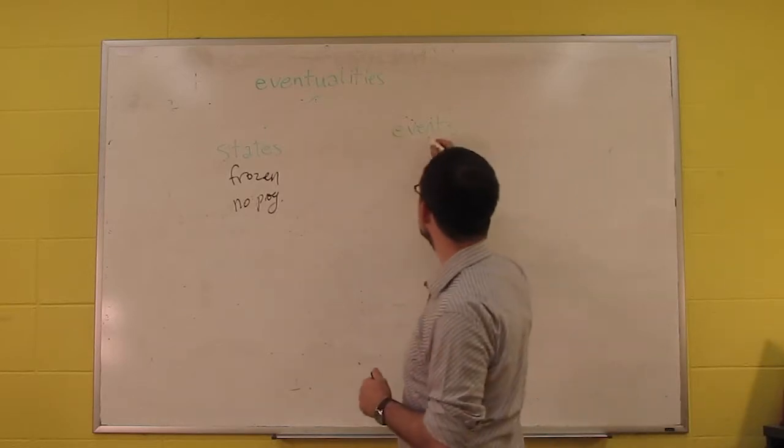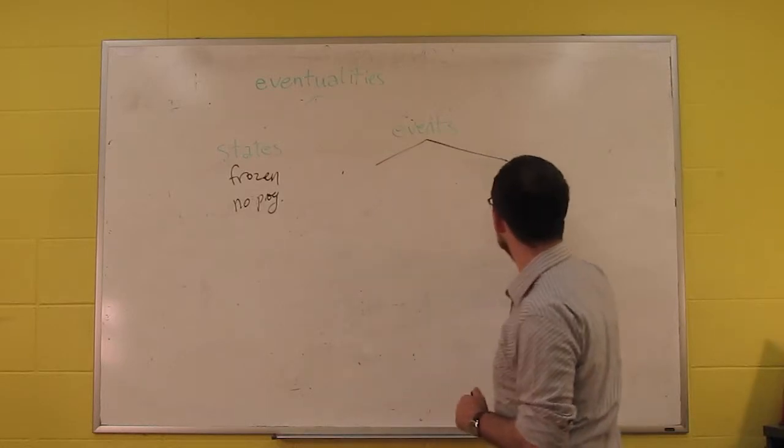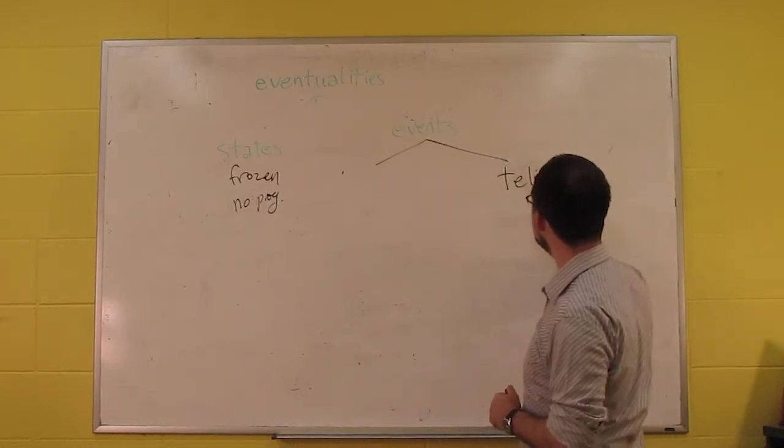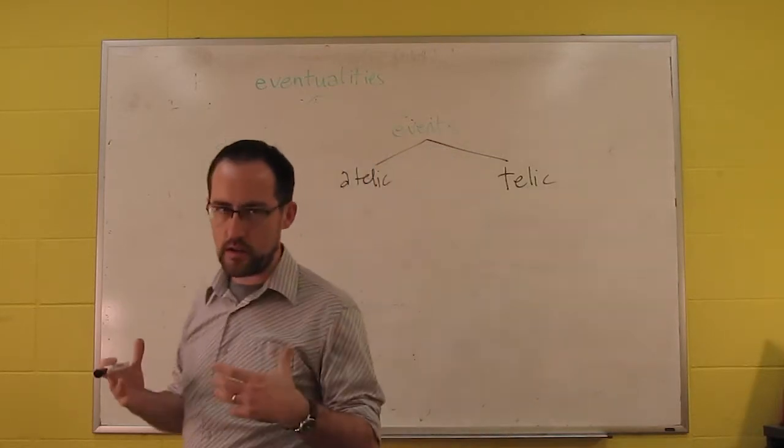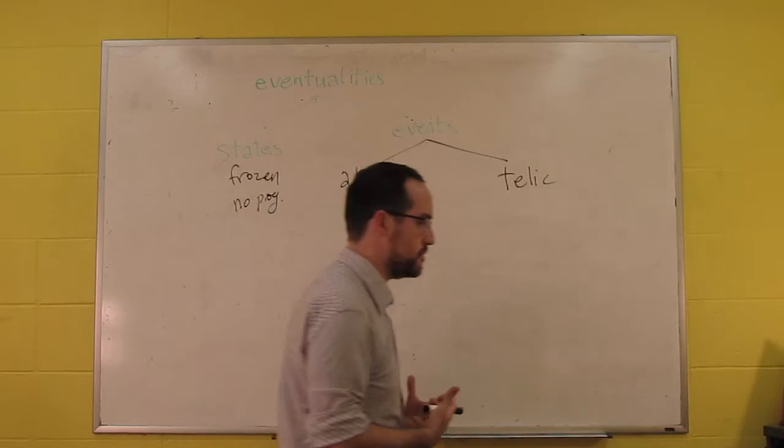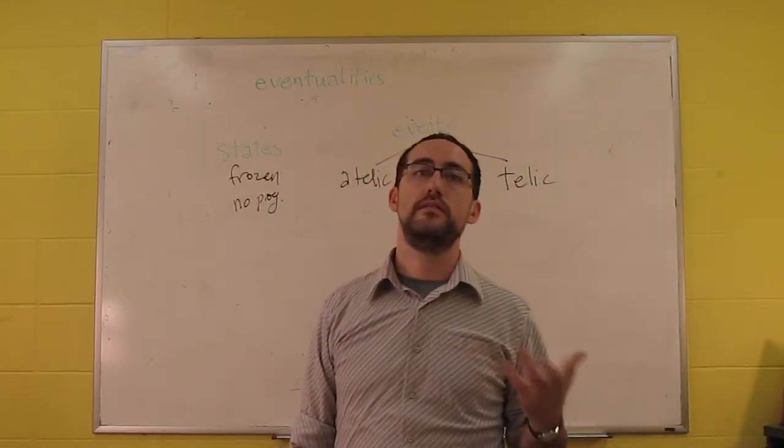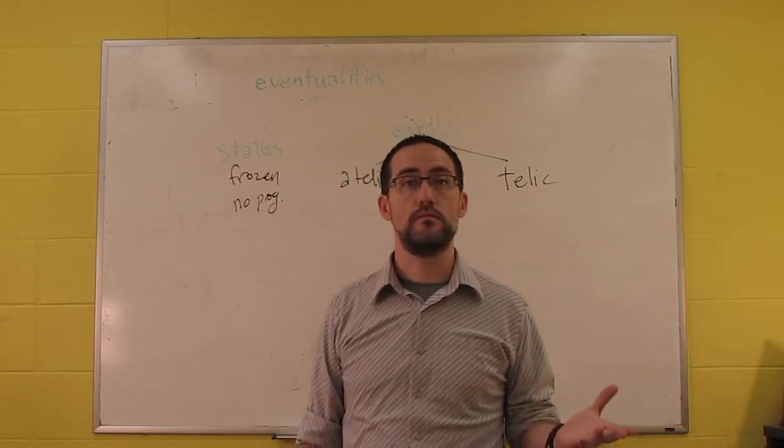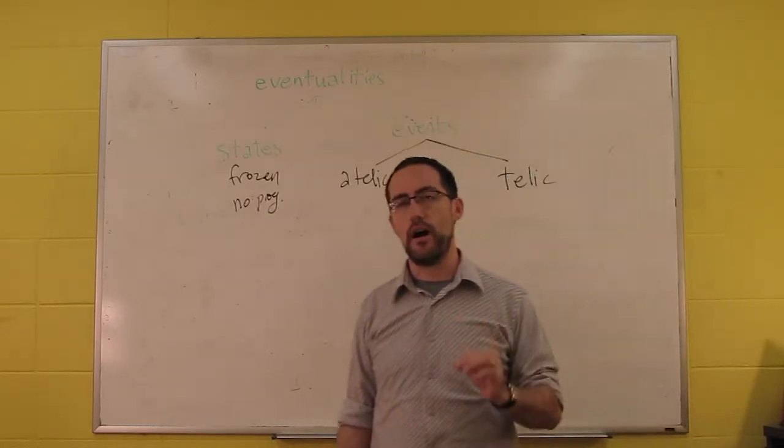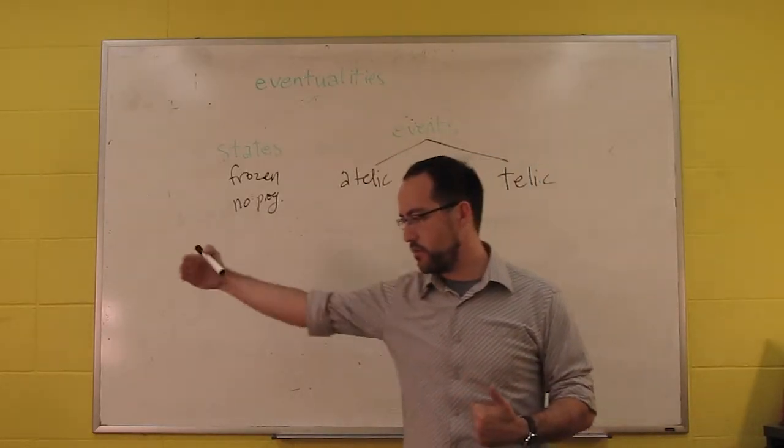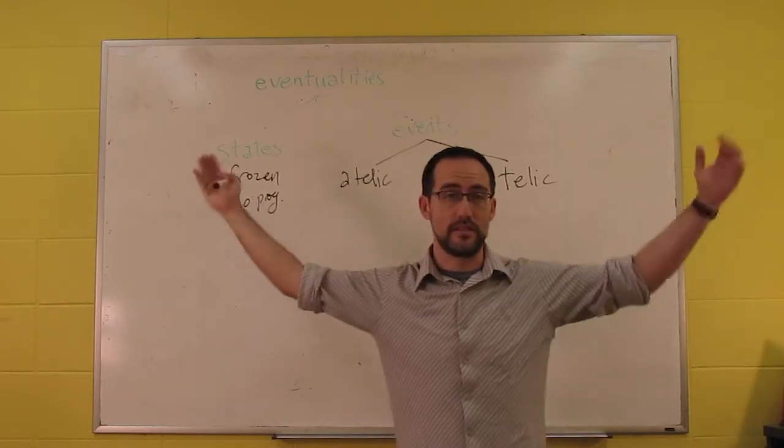Now the events can be broken down into two types as well. Let's put telic over here and atelic over here. So telic predicates are those that have a natural endpoint. And atelic ones are those without. So to give a simple example, you say I ran a mile. That is telic because there's a point where you can reach, and if I reach that point, I'm done. I've succeeded. I've run a mile.